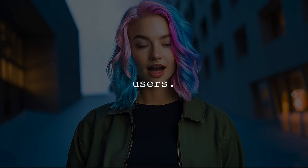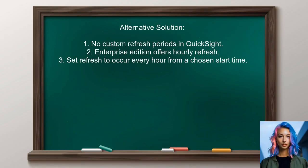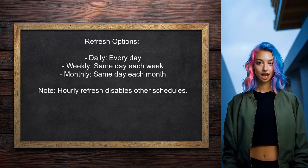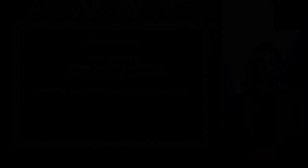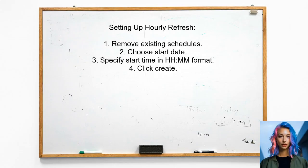Looking at answers from other users: currently, AWS QuickSight does not support custom refresh periods. However, if you are using the Enterprise Edition, you can set an hourly refresh option, allowing your dataset to refresh every hour starting at a specified time. For both Standard and Enterprise Editions, you can schedule daily, weekly, or monthly refreshes. For the Enterprise Edition, if you choose hourly refresh, you cannot have other refresh schedules — you'll need to remove any existing schedules first. Then choose a start date and time in 24-hour format and click Create to finalize your settings.